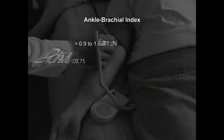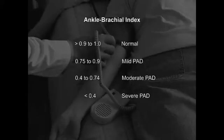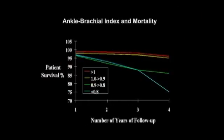The normal ankle brachial index is approximately 0.9 to 1.0. As disease becomes more severe, the ankle brachial index decreases, and in the most severe form, it is less than or equal to 0.4. The significance of detecting peripheral arterial disease is that the severity does correlate with mortality. The lower the ankle brachial index, the higher the correlation to increased mortality.